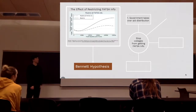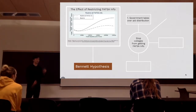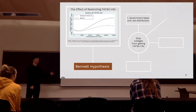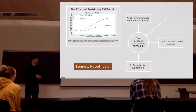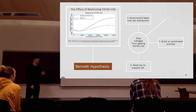The first step would be that the government should take the responsibility to distribute federal aid instead of letting colleges handle that, so that colleges don't have the ability to decide the aid. The second step is that the government should build an economic department to design an automated process to calculate the aid for each individual student. Third, they will raise taxes accordingly so that associated costs are accounted for, with 8% of college expenses coming directly from tax revenue generated.